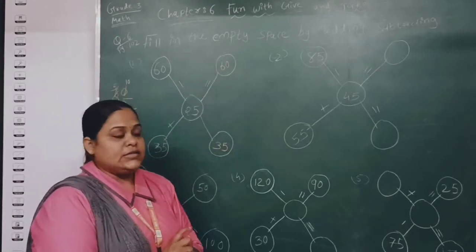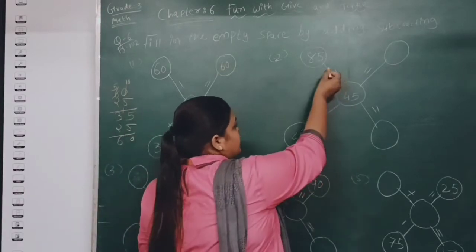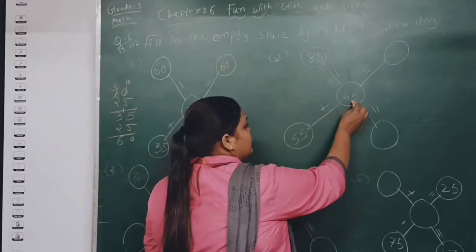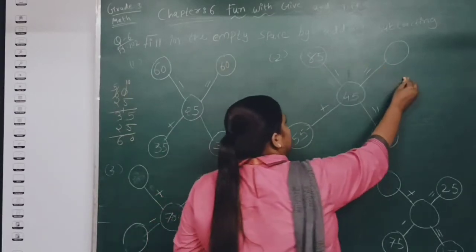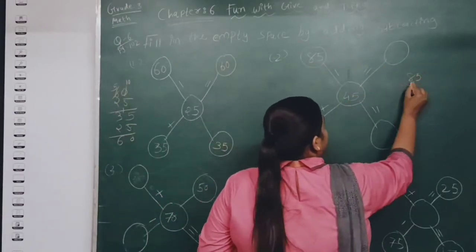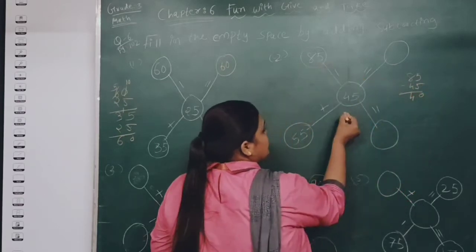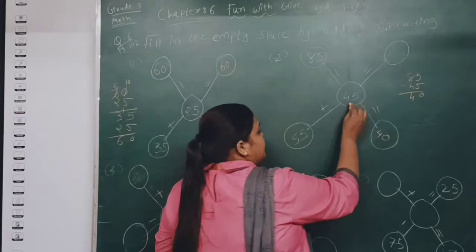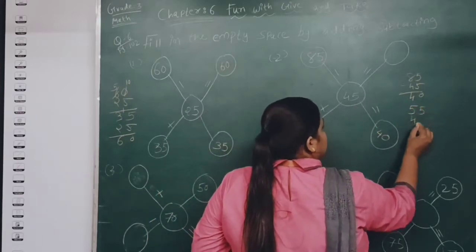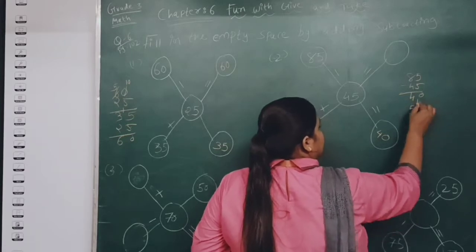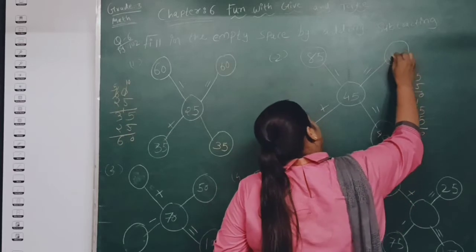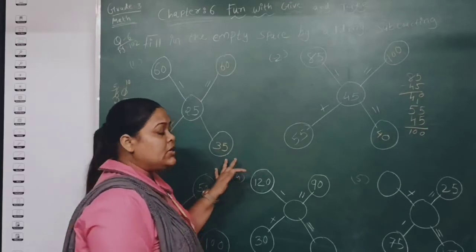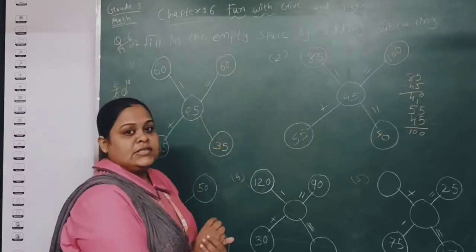Moving to the next. Here 85 minus 45: the answer is 40. And here 55 plus 45: 5 plus 5 is 10, 5 plus 5 is 10, so the answer is 100. As you can see, where the empty circle is, we have to find the answer according to the given sign of plus or minus.